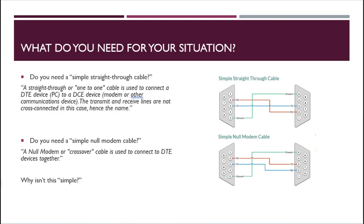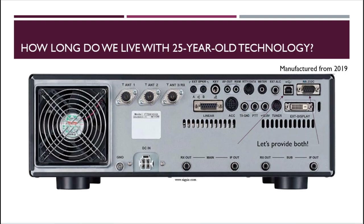Looking at the null modem cable, it provides a communications path by allowing RX to talk to TX and TX to talk to RX — pin two is connected to three and three is connected to two. Why isn't this simple? Because we should have gotten rid of it years ago, and second, people didn't follow the standards. So how long are we going to live with this 25-year-old technology?